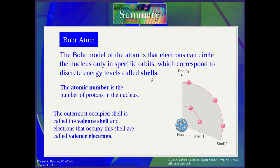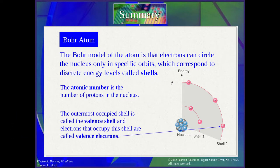The outermost shell — the seventh layer — we call the valence shell. It is called the valence shell because it contains the electrons we are most interested in. The electrons in this valence shell are called valence electrons.